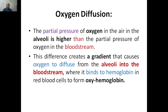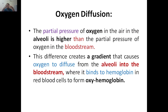Now, oxygen diffusion separately: the partial pressure of oxygen in the air — that is in the alveoli — is higher than the partial pressure of oxygen in the bloodstream. Oxygen's partial pressure is high in the alveoli, whereas in the bloodstream it is less. This difference creates a concentration gradient, meaning it moves from higher concentration to lower concentration. Because of this gradient, oxygen diffuses from the alveoli into the capillaries and into the bloodstream.